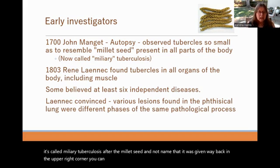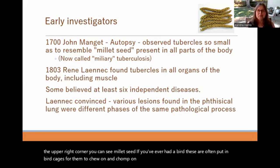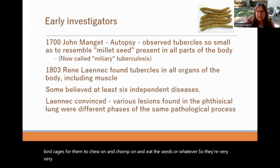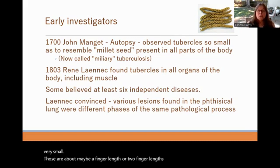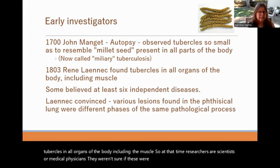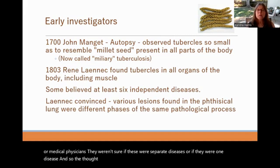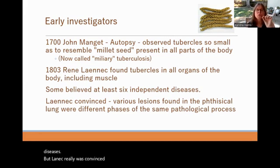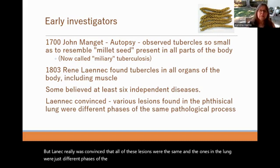In 1803, René Laennec found tubercles in all organs of the body, including muscle. At that time, researchers weren't sure if these were separate diseases or one disease — they thought there were probably five or six different diseases. But Laennec was convinced that all of these lesions were the same, and the ones in the lung were just different phases of those found elsewhere in the body — the same pathological process. And he was correct.